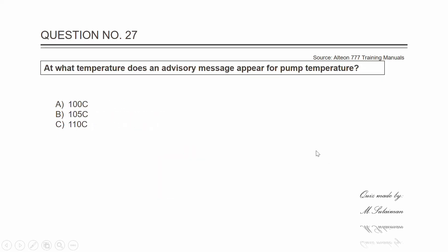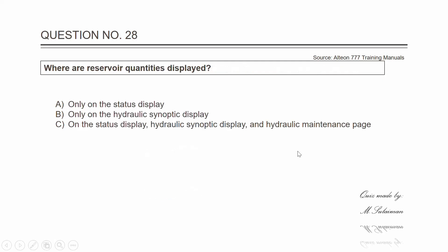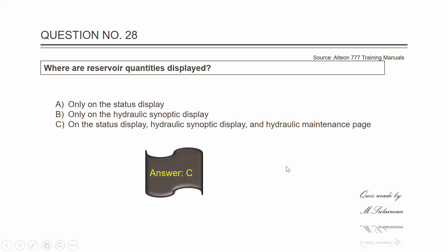Question twenty-seven: at what temperature does an advisory message appear for pump temperature? The answer is B — 105 degrees centigrade. Question twenty-eight: where are reservoir quantities displayed? The answer is C — on the status display, hydraulic synoptic display, and the hydraulic maintenance page.